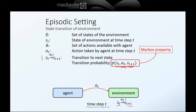This is the Markov property. The Markov property means that the transition probability depends only on the current state and the current action taken at time step T. It does not depend on what the previous states or previous actions were — S_{T-1}, A_{T-2}, S_{T-3}, and so on. It only depends on the present circumstances and the action taken. So it is memoryless — that's why it's called the Markov property.